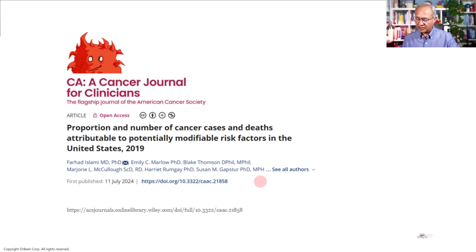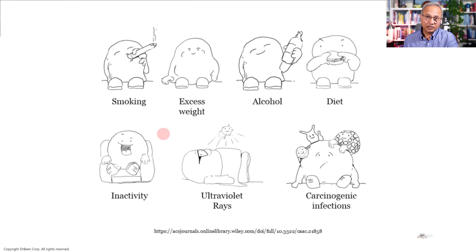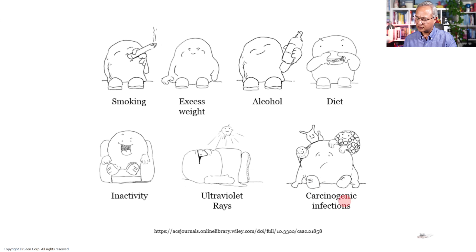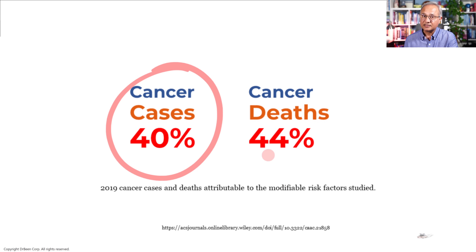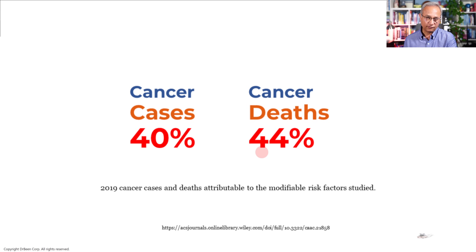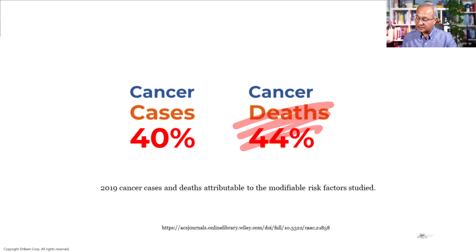Clinical takeaways: smoking was the top risk factor, then excess weight, alcohol use, diet, inactivity, ultraviolet rays, and carcinogenic infections. Researchers found that 40% of cancer cases and about 44% of cancer deaths were attributable to these modifiable risk factors. So imagine: if we start managing these, we can cut cancer deaths and cases nearly in half.